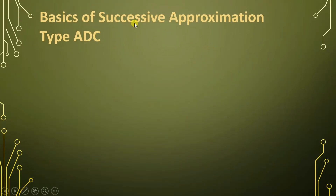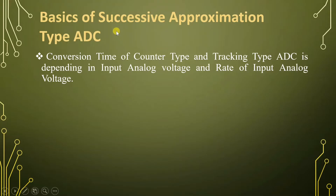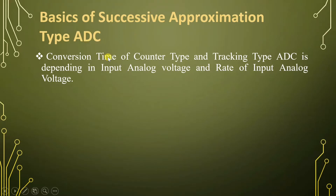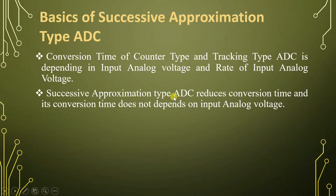When we talk about successive approximation type ADC, this ADC has better conversion time compared to counter type ADC and tracking type ADC. In my previous video, I already discussed counter type ADC and tracking type ADC. In those, conversion time period depended on input analog voltage and rate of input analog voltage. But with successive approximation type ADC, the conversion time period does not depend on input analog voltage or its rate. That is one basic advantage of successive approximation type ADC.